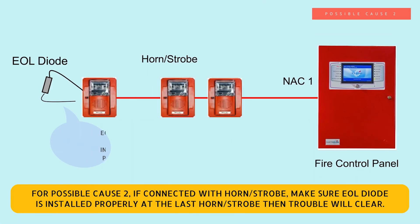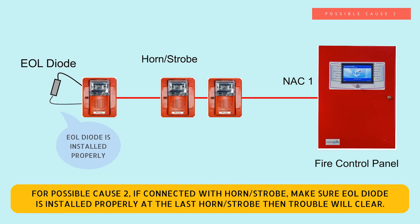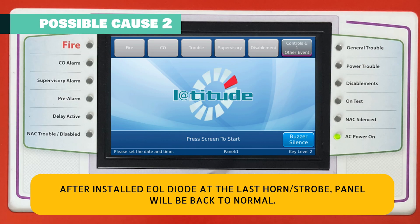For possible cause two: if connected with a horn strobe, make sure the EOL diode is installed properly at the last horn strobe. Then the trouble will clear and the panel will return to normal.